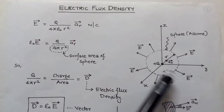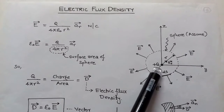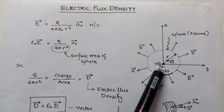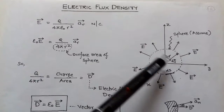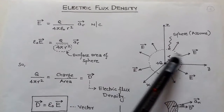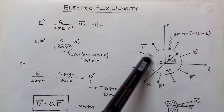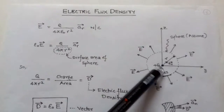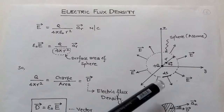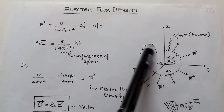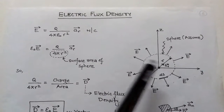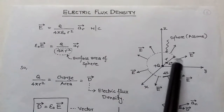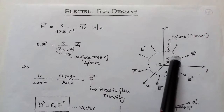We place a positive charge +Q at the origin on the XYZ plane. Since this is a positive charge, the electric field originates from it and terminates to infinity — there is no negative charge. Around this positive charge, we assume a sphere having a surface area of 4πR², with radius R.